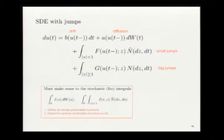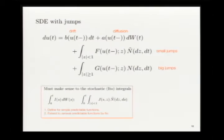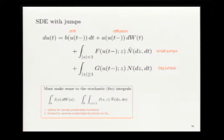SDEs driven by general Lévy processes can be written as: a drift term, a diffusion term, a big-jump term, and a nonlinear jump volatility integrated against the Poisson random measure, plus a compensated Poisson random measure capturing small jumps. Both stochastic integrals are interpreted in the Itô sense. You take any Lévy process, decompose into these three parts, write the SDE, and then study it with all parts or select components of interest.